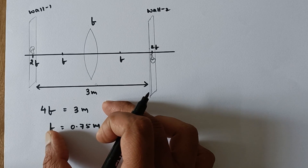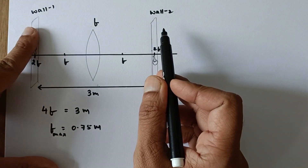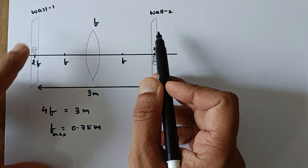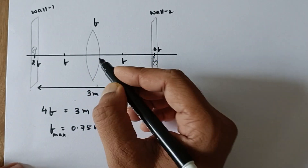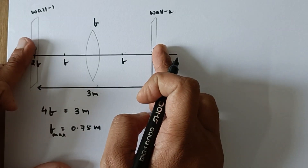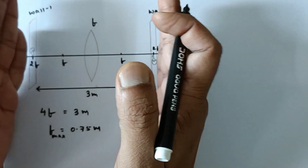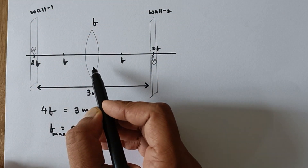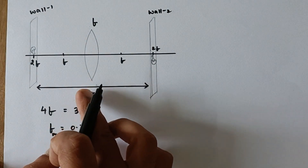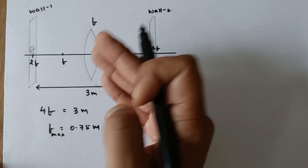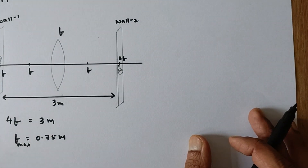Now we need to understand why this is the maximum focal length of the lens. In the problem it is asked for maximum focal length. It is because the distance between the walls is 3 meters. If you increase the focal length slightly, say from 0.75 to a larger value, then the gap between the real object and image will be more than 3 meters. We need to keep the image and object at a 3-meter gap. So if you try to increase the focal length, this gap will also increase — therefore 0.75 meters is the maximum focal length.